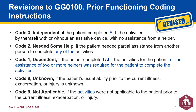In the coding instructions, please note how the use of words such as 'any' or 'all' will affect the way you answer the item. Code 3, independent, has not changed other than to add the word 'all,' so that it reads if the patient completed all the activities. Code 2, needed some help, indicates that the patient needed partial assistance to complete any of the activities. Code 1, dependent, if the helper completed all the activities, or the assistance of two or more helpers was required. Code 8, unknown, if the patient's usual ability is unknown, and not applicable if the activities were not applicable to this patient prior to their current illness, exacerbation, or injury.